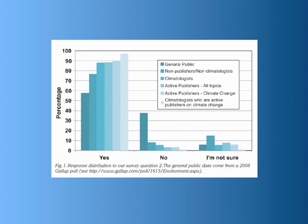Even scientists who are not climatologists — indicated by the darkest shade aside from the general public, where it says non-publishers, non-climatologists — the vast majority of scientists, even if they have no expertise in climatology specifically, are able to access scientific journal articles, understand the science behind it, and are in overwhelming agreement that humans are indeed contributing to global warming.